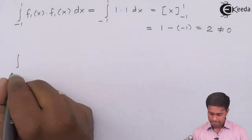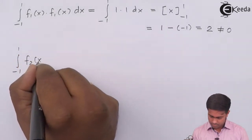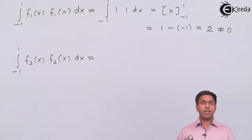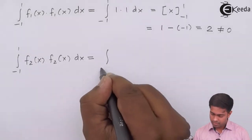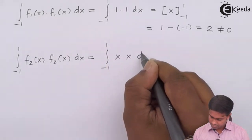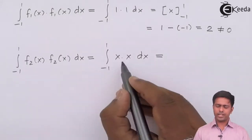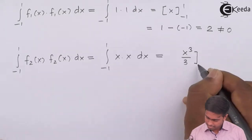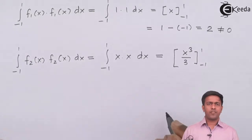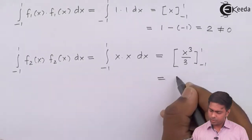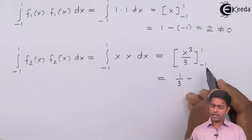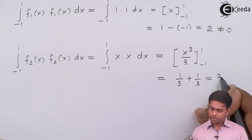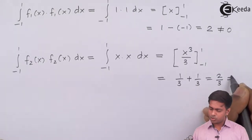Now let's take f2. The value of f2(x) is x, so f2(x)·f2(x) = x². The integral from −1 to 1 of x² dx = [x³/3] from −1 to 1. Putting upper limit gives 1/3; putting lower limit −1 gives (−1)³/3 = −1/3, which becomes positive 1/3. So the value is 2/3, which is also not equal to 0.